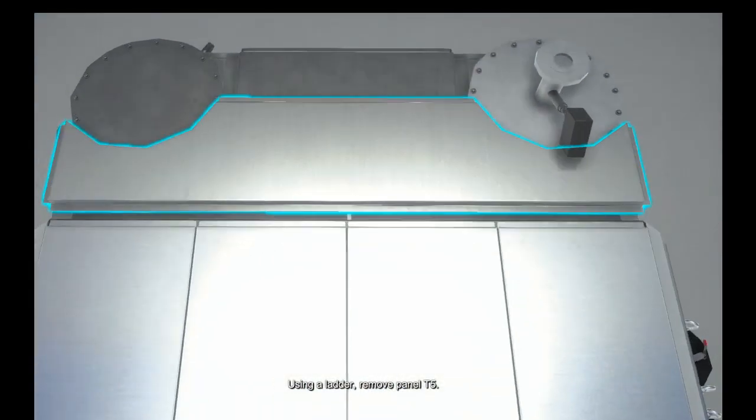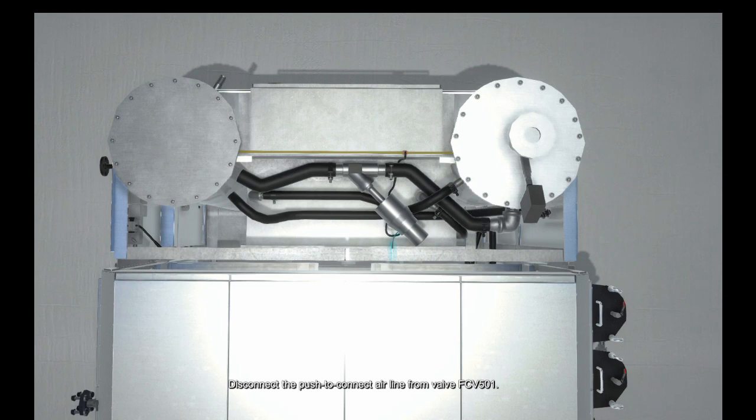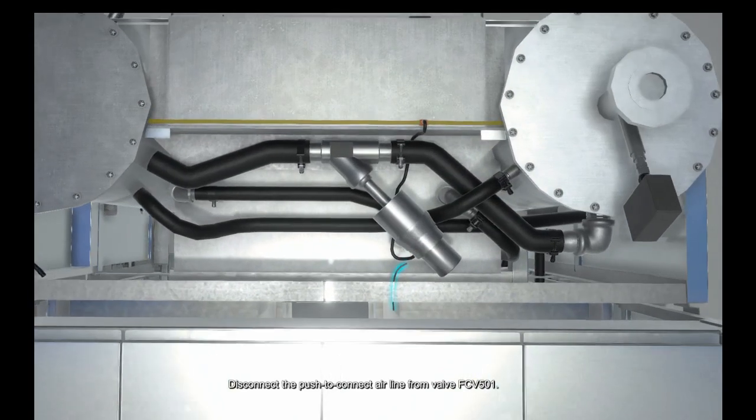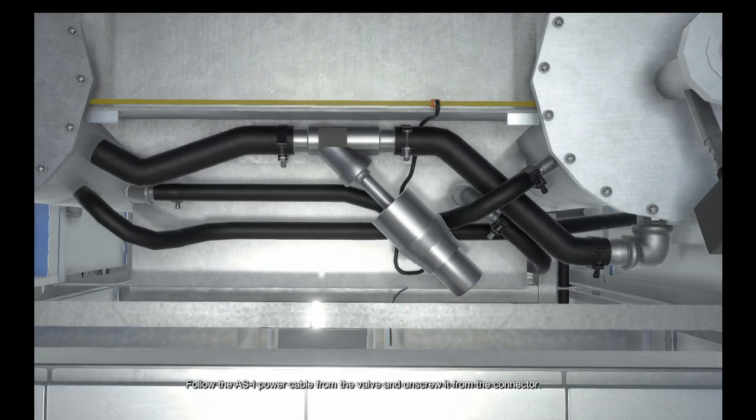Using a ladder, remove panel T5. Disconnect the push-to-connect air line from valve FCV501. Follow the ASI power cable from the valve and unscrew it from the connector.